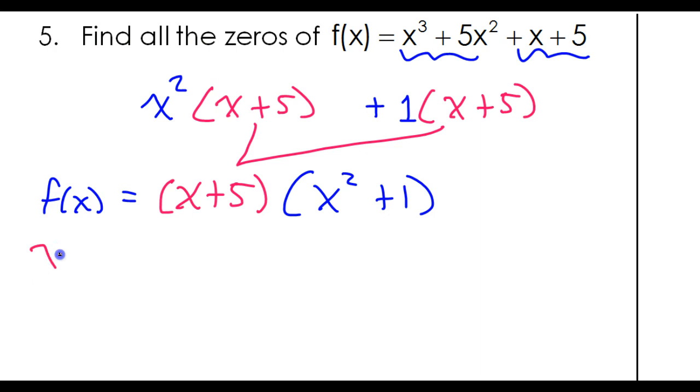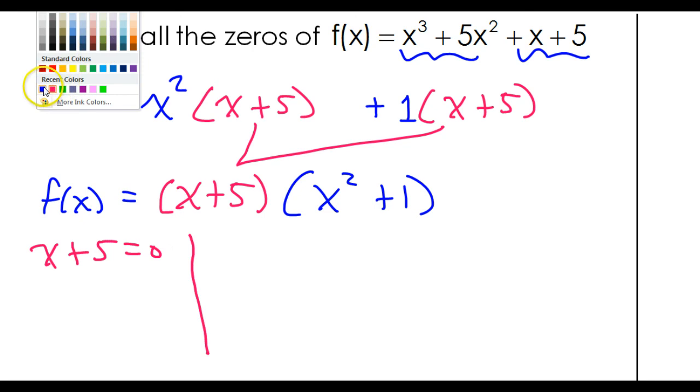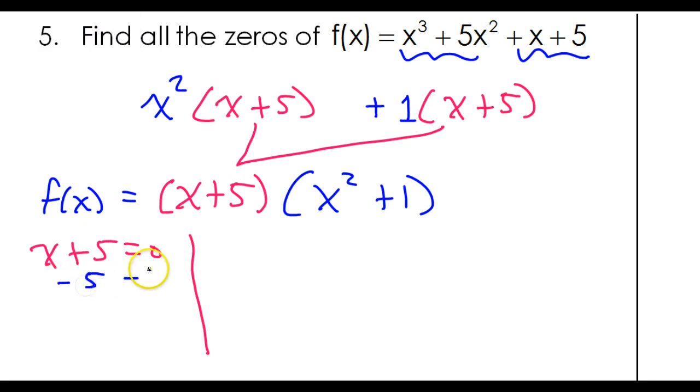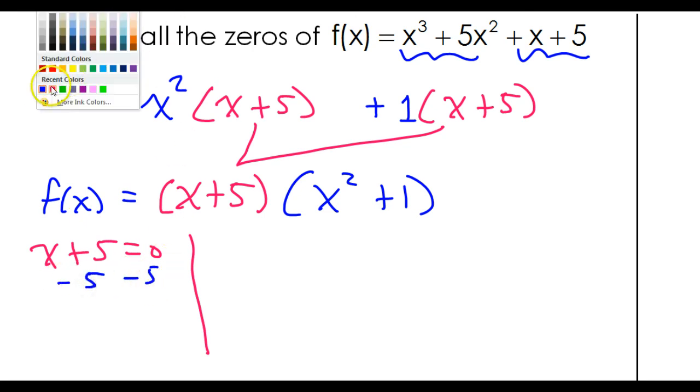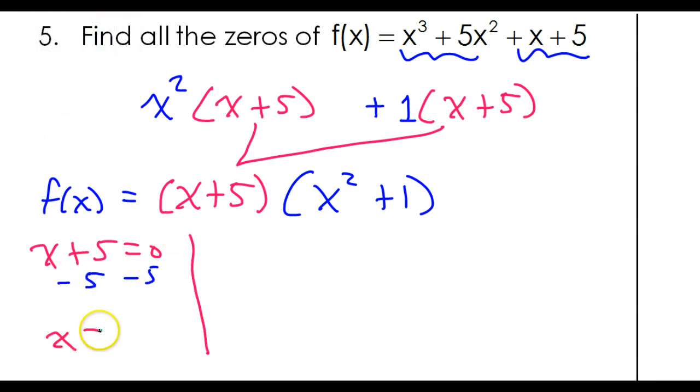If I take x plus 5 and set that equal to zero, obviously in that case I'm just subtracting 5 from both sides. So that's giving me x equals negative 5. Okay? That's one of my zeros.